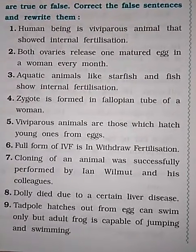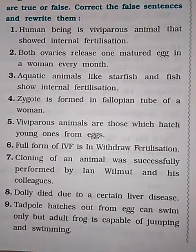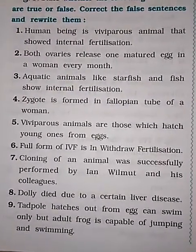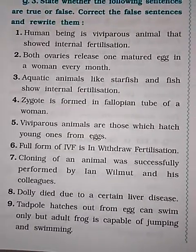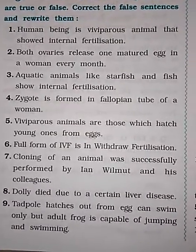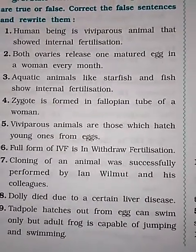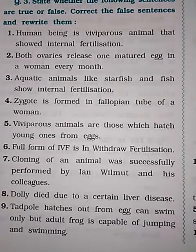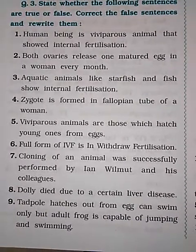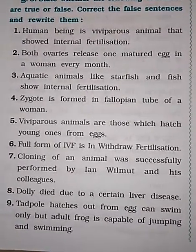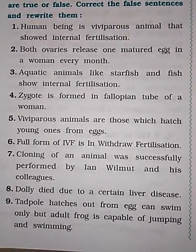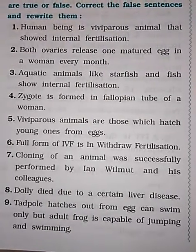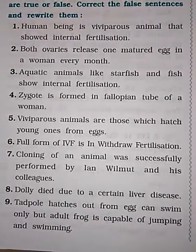Question: Viviparous animals are those which hatch young ones from eggs. Answer: False. Question: The full form of IVF is in vitro fertilization. Answer: False. Question: Cloning of an animal was successfully performed by I.N. Wilmot and his colleagues.